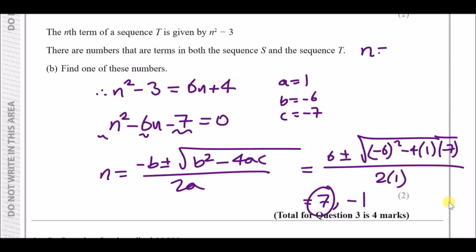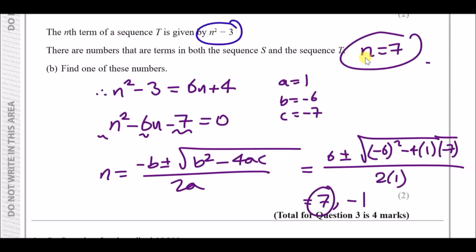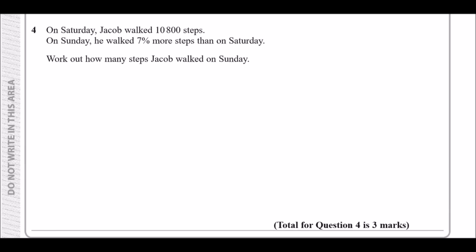With n = 7, plug into either nth term equation. Using T: 7² − 3 = 49 − 3 = 46. So 46 is one of the common terms in both sequences S and T.